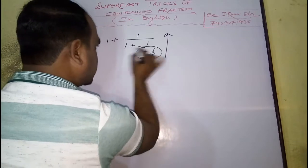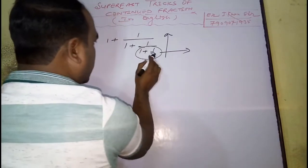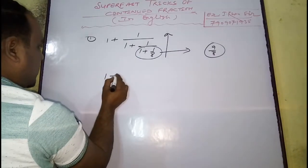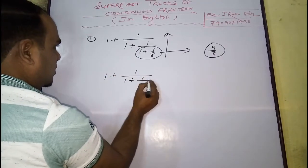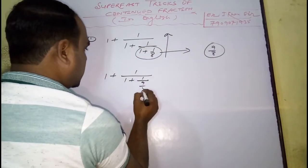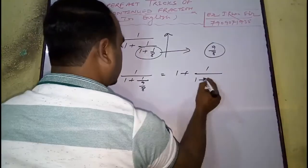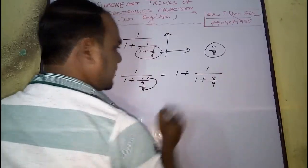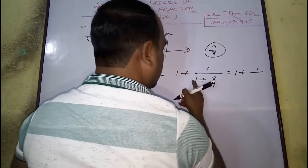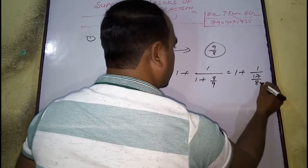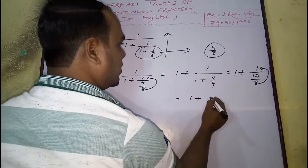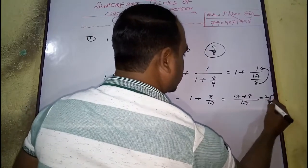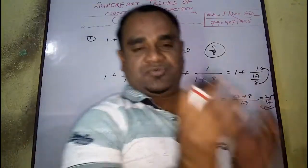You can solve this fraction separately. 8 plus 1 means that will be 9 by 8. And now you can write this as 1 plus 1 by 1 plus, and this 8 will go as a numerator. This is a very simple and easy trick.